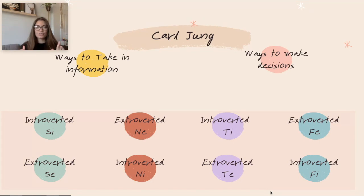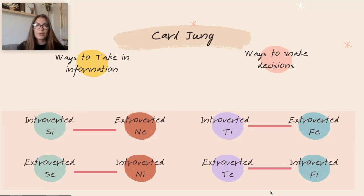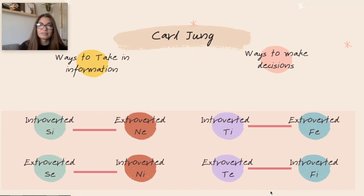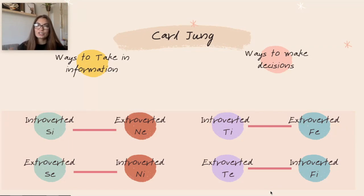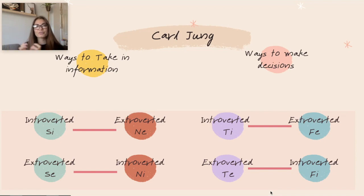Not everyone has all of these, but we'll get into which ones you have in the next video. These functions also come in opposites — I've drawn lines showing these axes. Introverted sensing is the opposite of extroverted intuition, because introverted is the opposite of extroverted, and sensing is the opposite of intuition. They're like yin and yang — if you have one part of an axis, you also have the other in your personality, which balances you out.